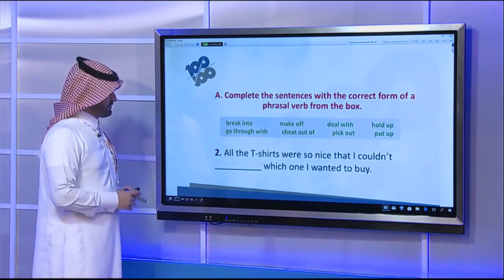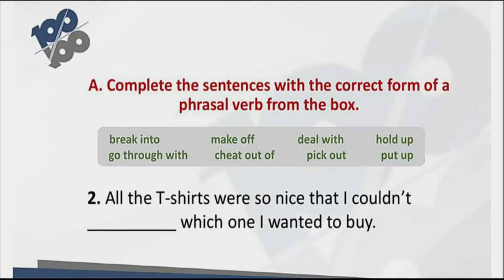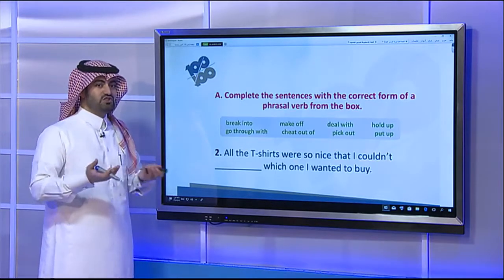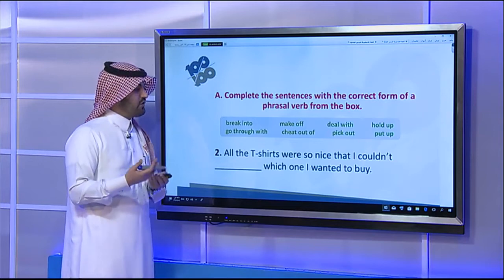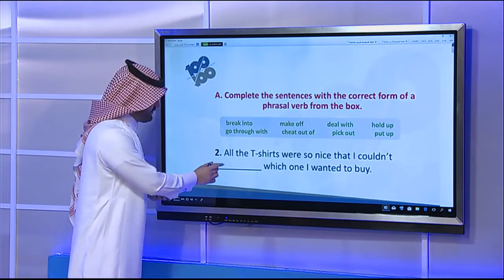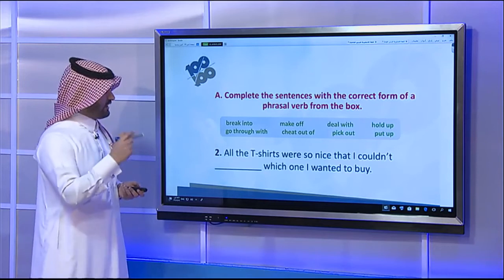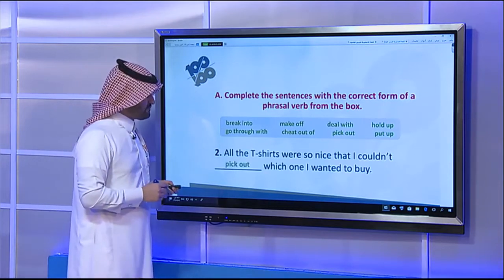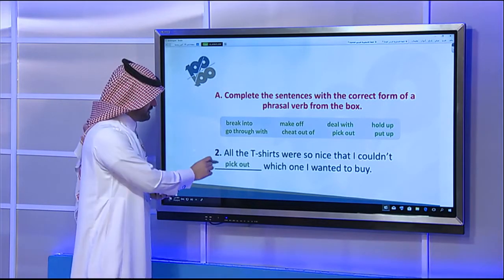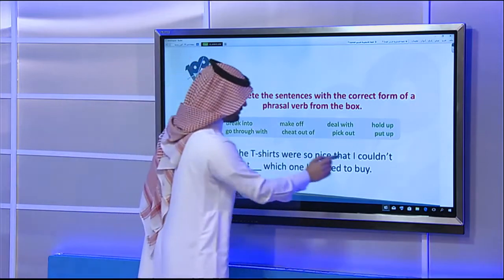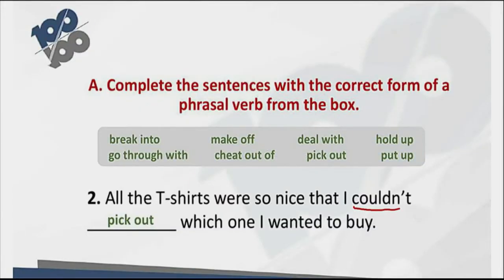Sentence two: 'All the T-shirts were so nice that I couldn't ___ which one I wanted to buy.' I went to the shop and found beautiful T-shirts — I'm confused which one to choose because they're all nice. I need a verb meaning to choose or select. The answer is 'pick out', in the base form because it follows the modal verb 'could'.